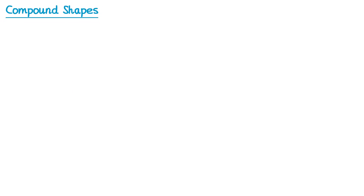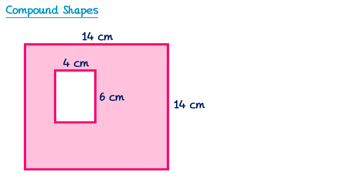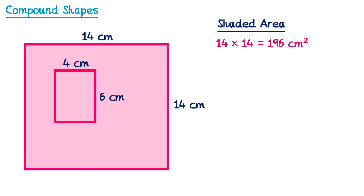Sometimes exam questions look like this: we're given a shape and asked to work out the shaded area. To find the shaded area, the first thing we do is work out the area of the whole square as if everything were shaded — we multiply 14 and 14, which is 196. Then we remove the area of the unshaded rectangle by multiplying 4 and 6, which is 24, and subtract that from 196. So 196 subtract 24 gives us 172 centimeters squared.